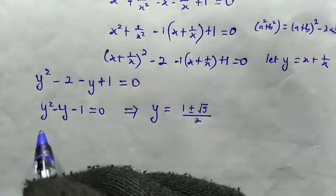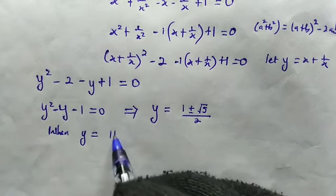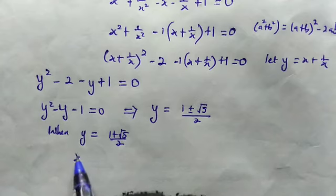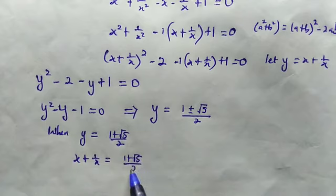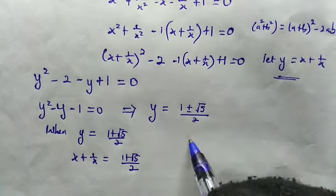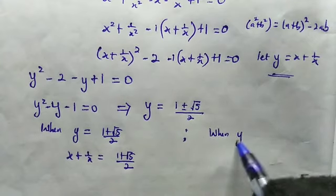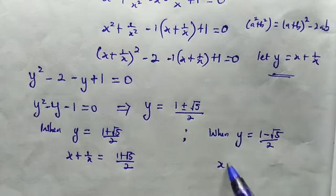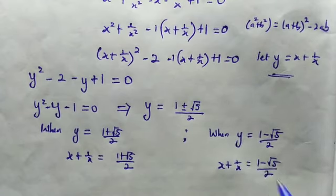So we have two cases. When y equals (1 + √5)/2 — which is the golden ratio — then x + 1/x equals (1 + √5)/2. And for the other condition, when y equals (1 − √5)/2, then x + 1/x equals (1 − √5)/2.